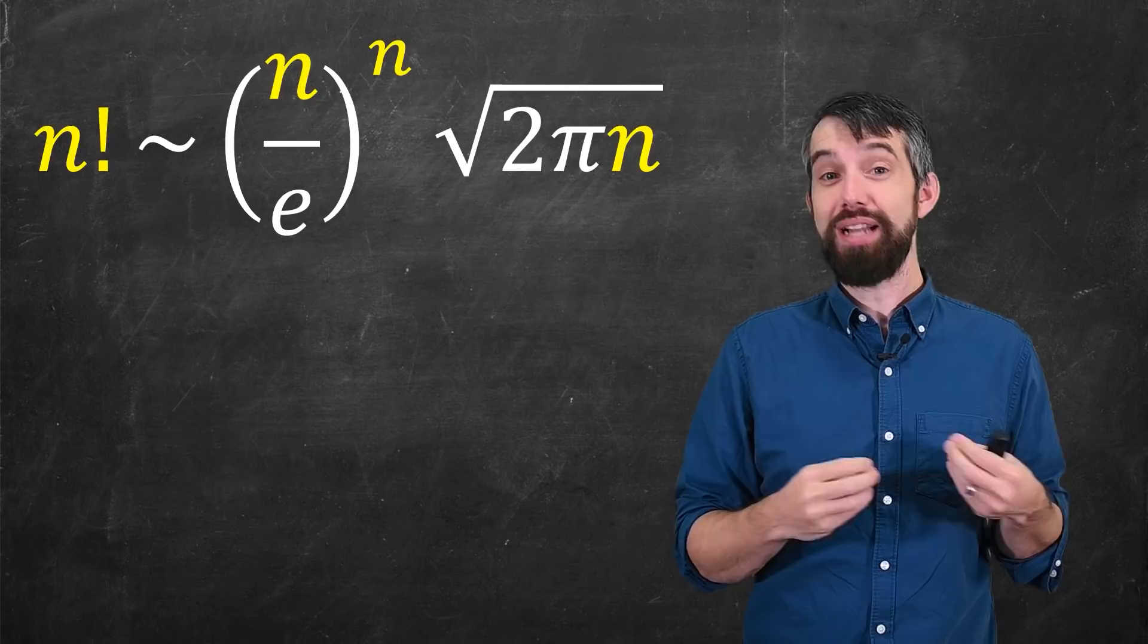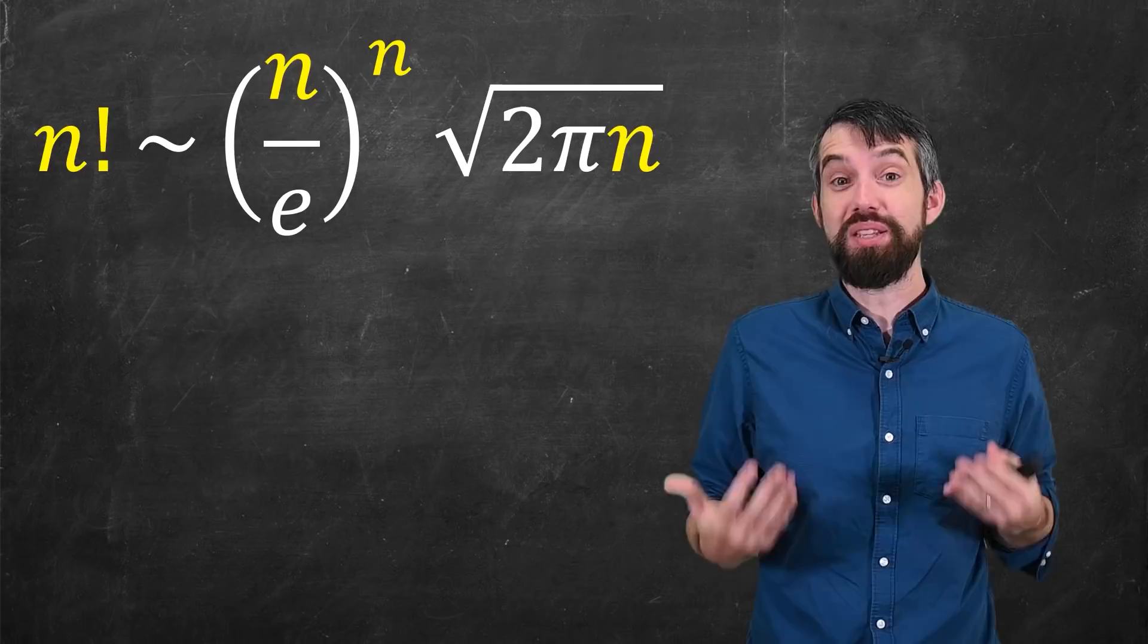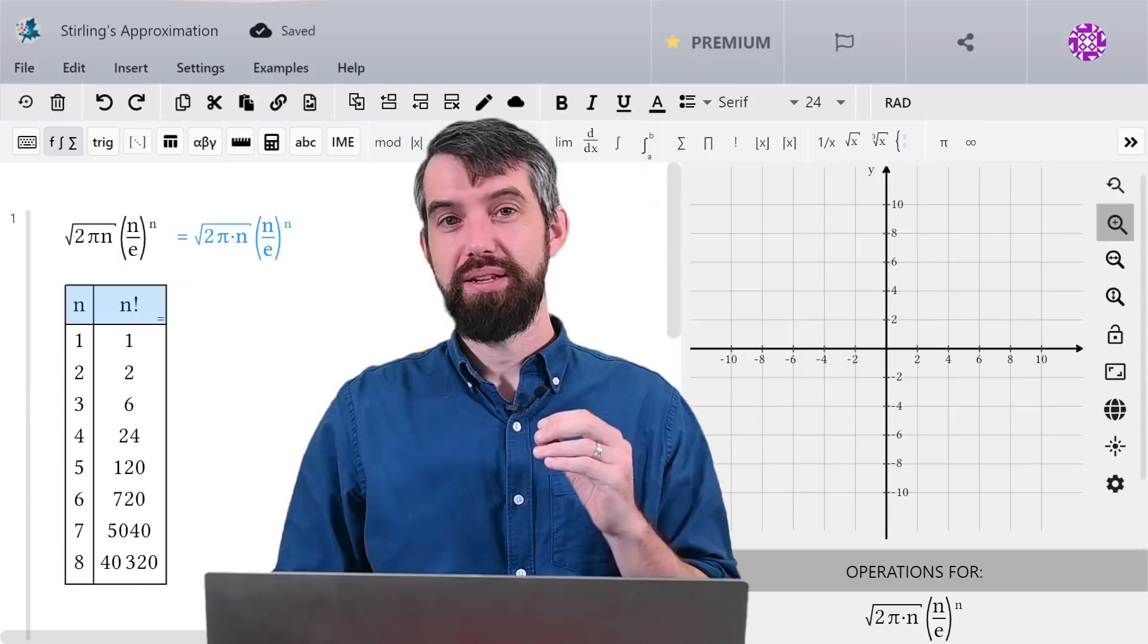And to be clear, by approximation, what I really mean is that in the limit as n gets large, the ratio of these two things is just 1. But to get at least some visual intuition about how nicely these two expressions are going to be matched, I'm going to plot them.